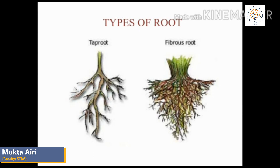The second type is fibrous root. When a number of roots grow from the end of the stem, it is called fibrous root. Fibrous root is opposite to taproot — it looks like a mat made out of roots. Fibrous roots are found in plants like onion, grass, and wheat. The functions of roots are: roots hold the plant firmly to the ground, roots take in water, minerals, and salts from the ground, roots hold the soil and prevent it from being washed away by water or wind, and desert plants develop long roots that go deep down in search of water.